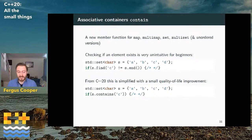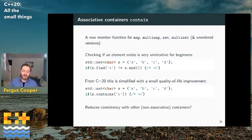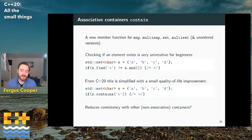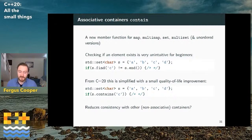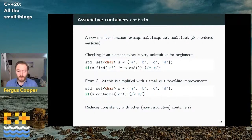The only slight quibble is whether this reduces consistency with non-associative containers. If you have a vector of integers and want to know whether it contains a 3, there is no vector::contains member function. You're back to the previous idiom of using std::find and checking against end(). Great that we've got it for associative containers — but is it a missed opportunity that we don't have it for the others as well? Perhaps. I'll leave that as an open question.